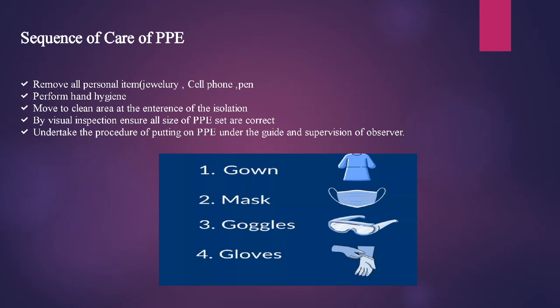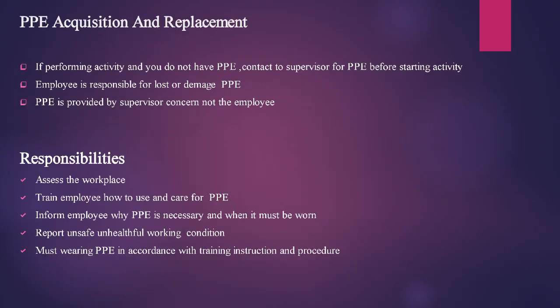For PPE care: undertake the procedure of putting on PPE under guidance and supervision. If performing an activity and you do not have PPE, contact your supervisor before starting. The employee is responsible for lost or damaged PPE; PPE is provided by the supervisor. Responsibilities include assessing the workplace, training employees on how to use and care for PPE, informing employees why PPE is necessary and when it must be worn, reporting unsafe working conditions, and wearing PPE in accordance with training instructions.